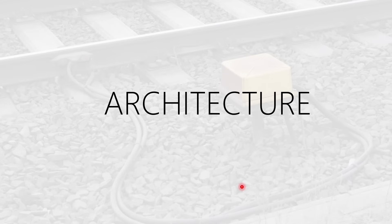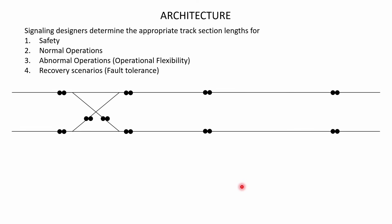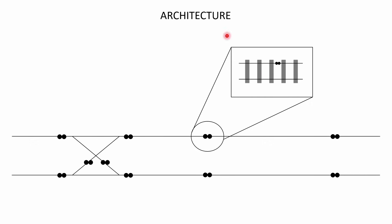Now let's look at the architecture. There is no single way to explain this since every manufacturer and project could have subtle differences, but I'll talk about what the architecture is like in general. Starting with an example track — an empty segment where we'll place axle counters. Signaling designers, in coordination with other disciplines, determine the appropriate track section lengths based on safety, normal operation, abnormal operation for operational flexibility, and recovery scenarios for fault tolerance. They decide where to place the axle counters, which are placed on one side of the track.